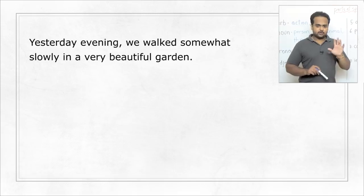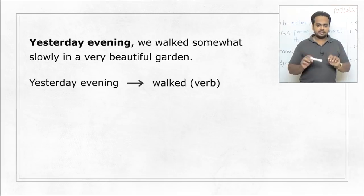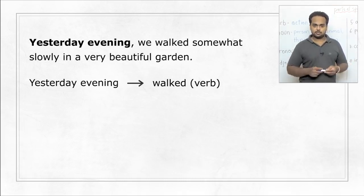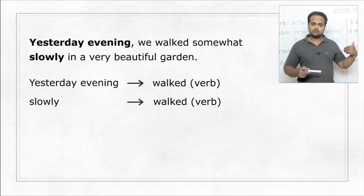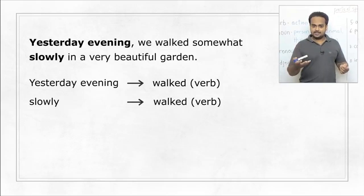Yesterday evening we walked somewhat slowly in a very beautiful garden. In this sentence, the first adverb is yesterday evening. That shows us when the action happened. The action here is walk. That's the verb. There's another adverb, slowly, and that shows us how the action happened. How did we walk? We walked slowly. So both yesterday evening and slowly tell us about the verb walk.